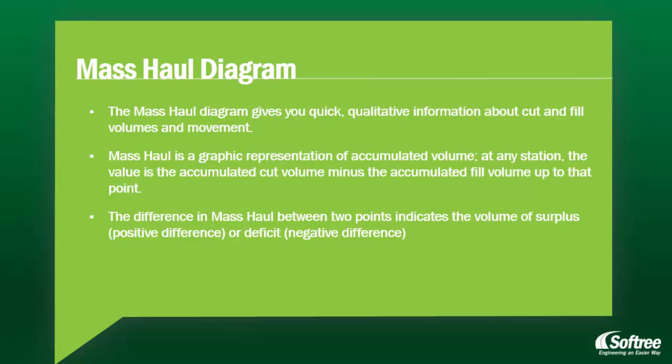The Mass Haul Diagram gives you quick qualitative information about the cut and fill volumes and movement. Mass Haul is a graphic representation of accumulated volume. At any station, the value is the accumulated cut volume minus the accumulated fill volume up to that point. The difference in Mass Haul between two points indicates the volume of surplus (positive difference) or deficit (negative difference).